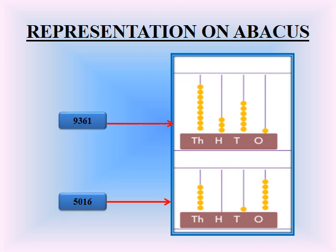See the next example. The number is five thousand sixteen. Here five is at thousands place, zero is at hundreds place, one is at tens place, and six is at ones place. We have to place the beads accordingly: five beads at thousands place, no bead at hundreds place as there is zero, one bead at tens place, and six beads at ones place.